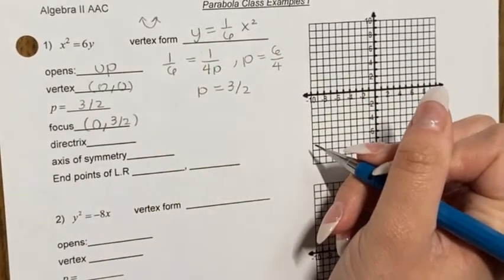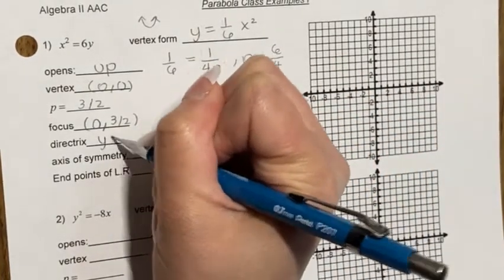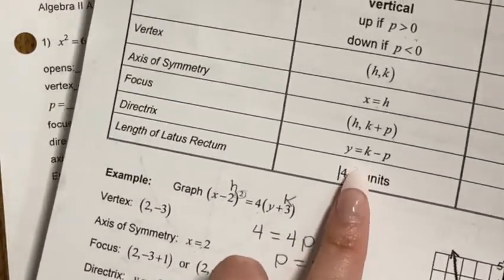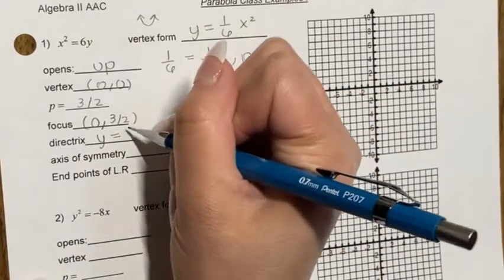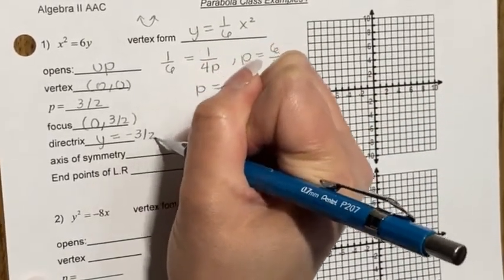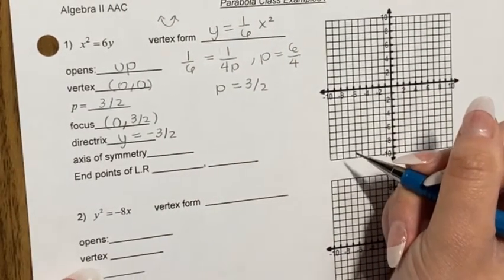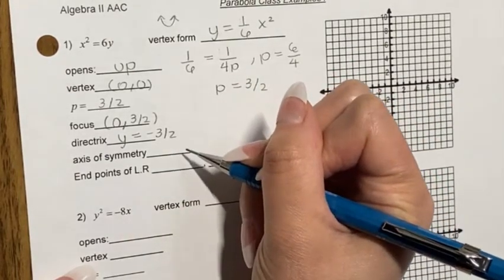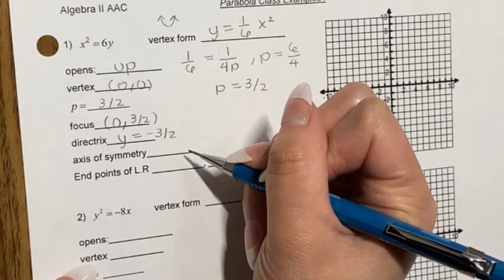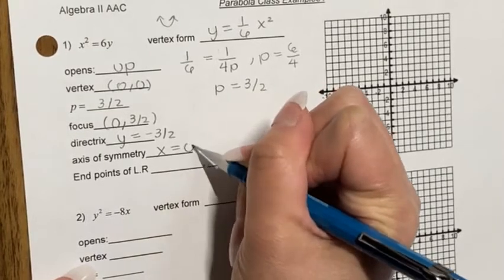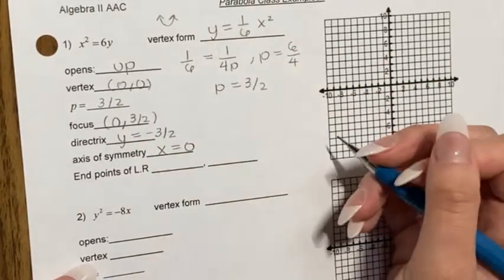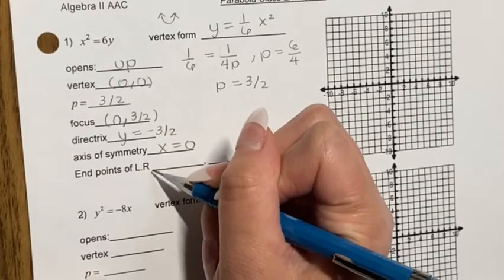The directrix is y = k − p = 0 − 3/2 = −3/2. The axis of symmetry is x = h = x = 0. So the axis of symmetry is the y-axis itself.